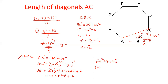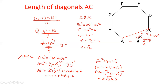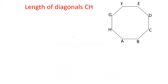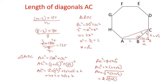We can take out 4 common: AC squared equals 4 times (2 plus root 2). So the value of AC will be under root of 4 times (2 plus root 2), and since square root of 4 is 2, AC equals 2 under root (2 plus root 2). That is the length of diagonal AC when AB is 2, calculated by Pythagoras theorem.